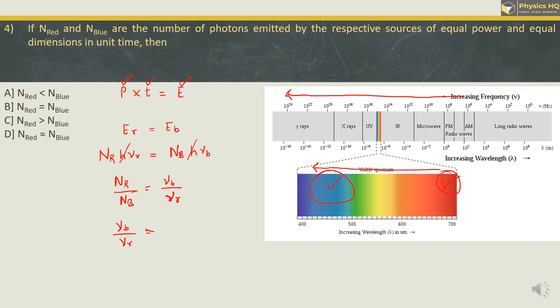Since frequency of blue is greater than frequency of red, we can say that this ratio will be greater than 1. So if this part is greater than 1, we can write n_r upon n_b will also be greater than 1, which simply means that number of red photons is greater than number of blue photons. Hope you all understood this.